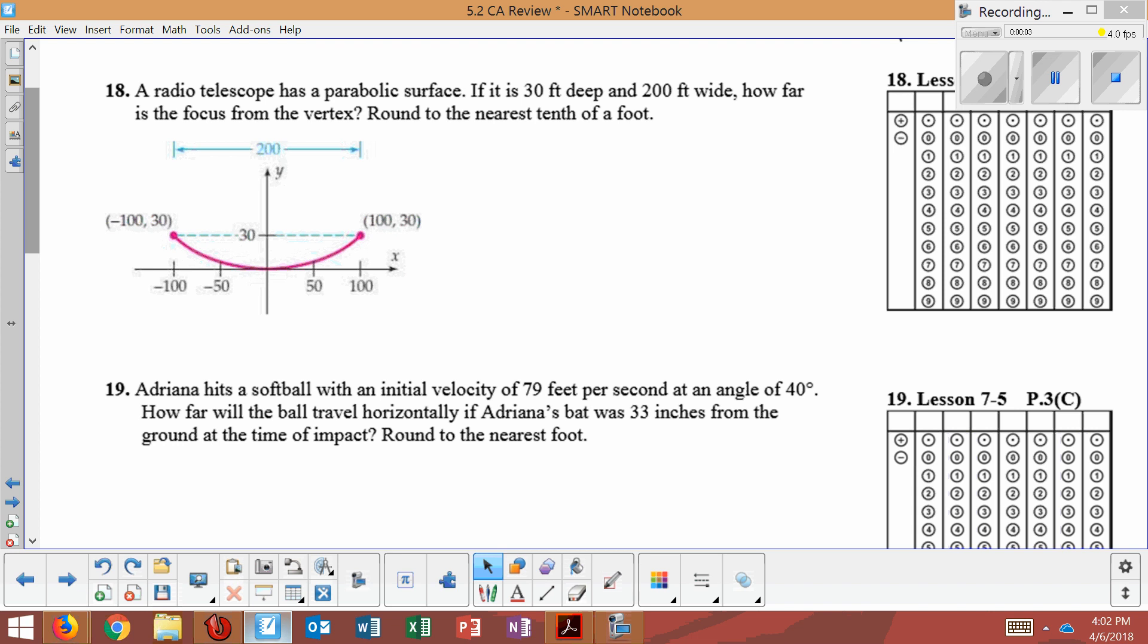Number 18, a radio telescope has a parabolic surface. If it's 30 feet deep and 200 feet wide, how far is the focus from the vertex? Round your answer to the nearest tenth of a foot.